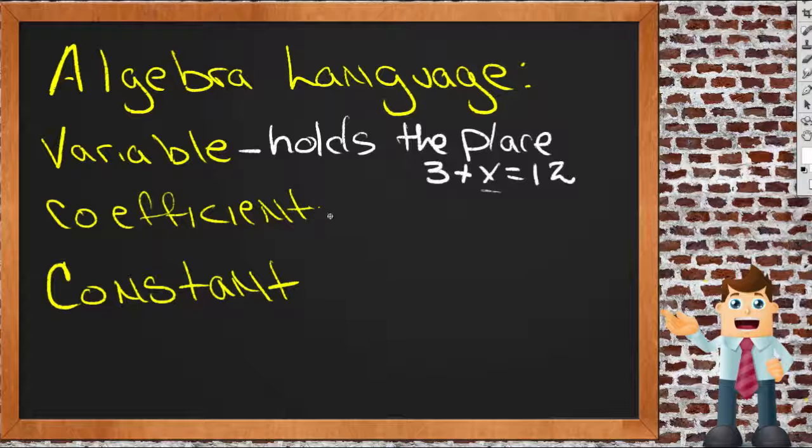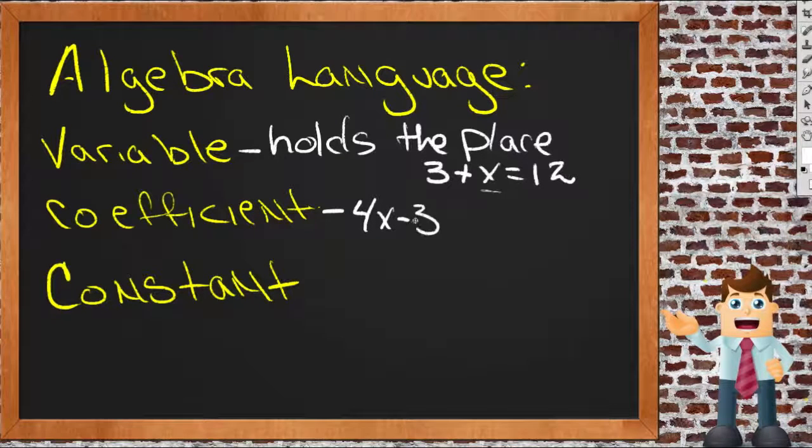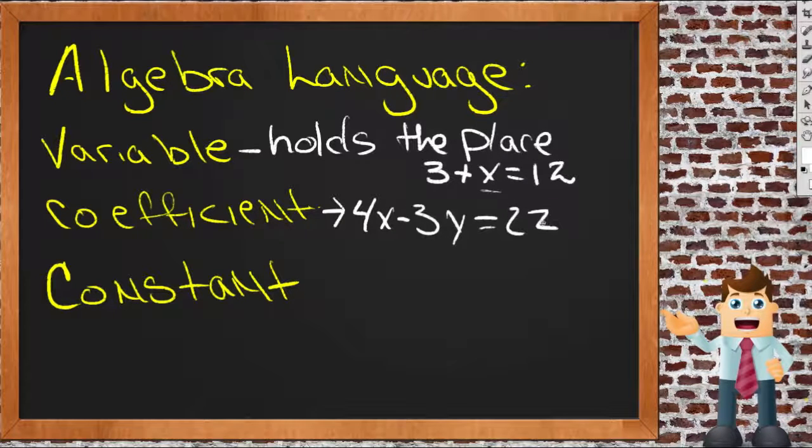Now a coefficient, a coefficient is the number of variables that you have in a given statement. For instance, if my statement was 4x minus 3y equals 2z. In this statement, 4, negative 3, and 2 are all coefficients. They're the numbers of variables that I have, or the number that's being multiplied by the variable if you wish.